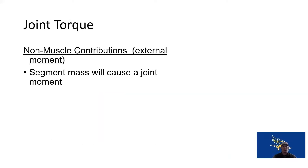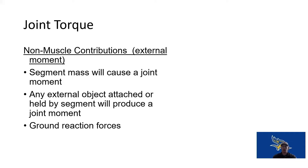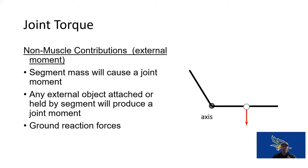There are also external torques. Ground reaction forces — the forces the ground applies back onto us — cause torque on our joints and body. Anything external we hold or contact, and even the mass of our own limbs and where their center of mass is located, creates external torque. The further that center of mass is from the axis, the greater the external torque. Muscles create internal torques; the environment and gravity create external torques.